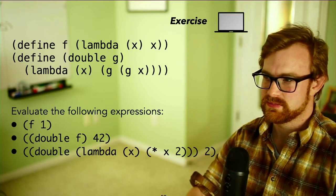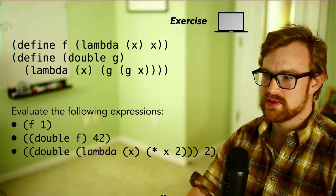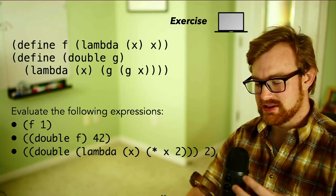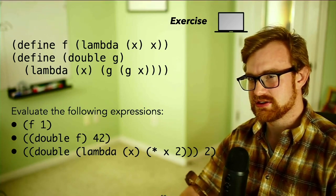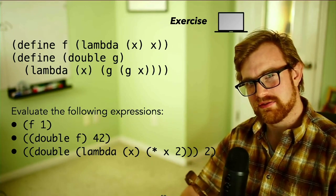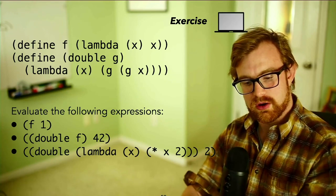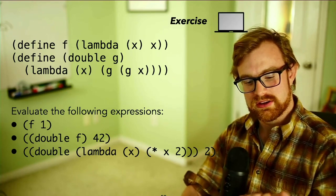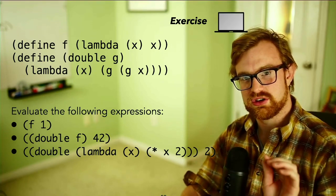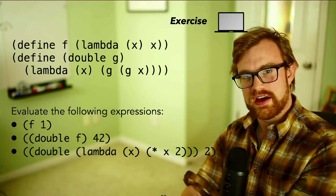Let's work through a few examples. We have function f, which is lambda x, x — the identity function. We also have function double of g, which is lambda x, and it's going to take g and apply it twice. So double is going to take some function f and return a function that wraps f and performs f twice in a row. For example, double(f) is a function that calls the identity function, and then calls it again on the result.